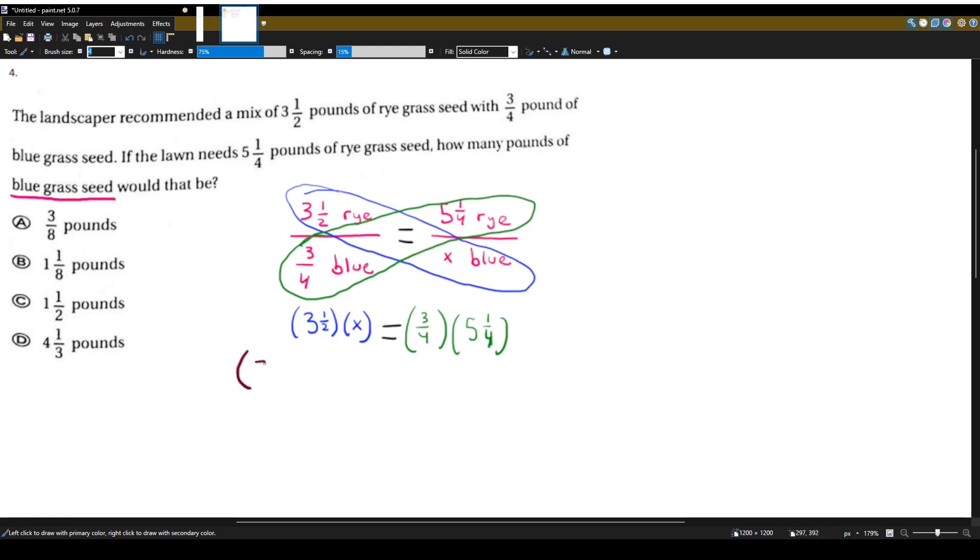For example, three and a half is just 3.5, right? Because one-half is just 0.5 times x. Three-fourths is 0.75, and five and one-fourths is 5.25.